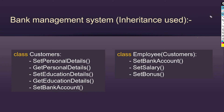In the customer class we wrote 5 methods — 500 lines of code. But four methods are common between customers and employees: set personal details, get personal details, set education details, and get education details — because every employee also has personal details and education details. So instead of writing these 4 methods again, we can inherit the employee class from the customer class. Set bank account is still written separately in the employee class because its functionality is different.